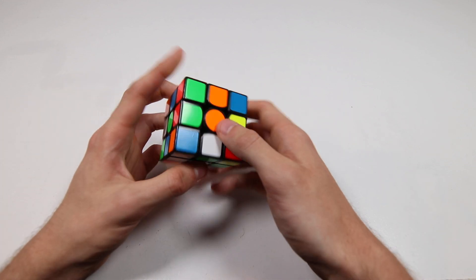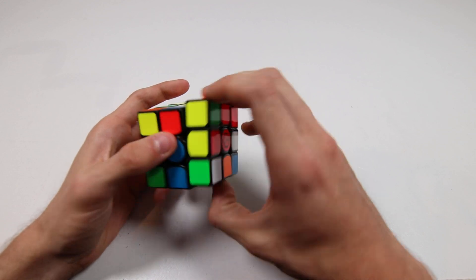Now I'm just going to scramble the cube off camera and I'm going to do an example solve and point out me doing this finger trick. Hopefully there's at least a few that come up because, like I said, this has been coming up quite a bit. I won't explain cross because it's probably not going to come up there.